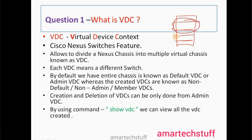Physically it will appear as one switch, but by using the VDC feature a network administrator can make many switches out of this one switch — each VDC means a different switch. By default, the entire chassis is known as the default VDC or admin VDC, whereas the created VDCs are known as non-default, non-admin, or member VDCs. Creation and deletion of VDCs can only be done from the admin VDC.